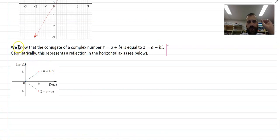And finally, we know that the conjugate of a complex number z equals a plus bi is equal to z equals a minus bi. Geometrically, this represents a reflection in the horizontal axis.